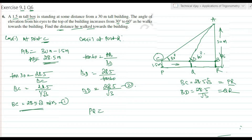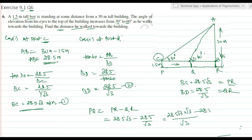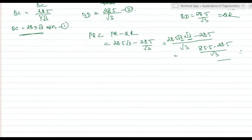The distance walked PQ equals PR minus QR equals 28.5 root 3 minus 28.5 divided by root 3. Taking LCM as root 3: this becomes (3 × 28.5 − 28.5) divided by root 3 equals (85.5 − 28.5) divided by root 3 equals 57 divided by root 3. Rationalizing by multiplying by root 3 over root 3 gives 57 root 3 divided by 3 equals 19 root 3 meters.